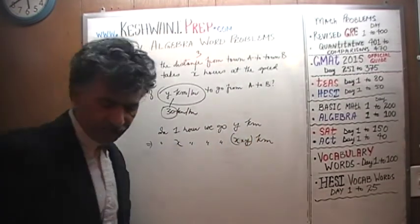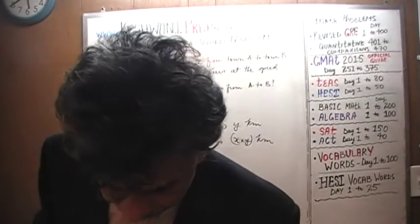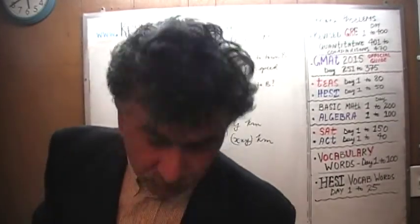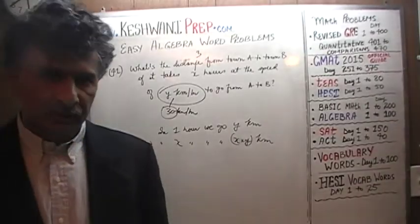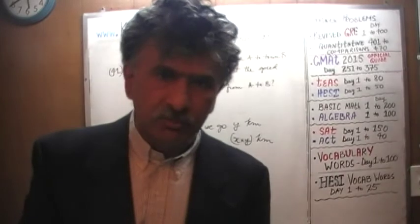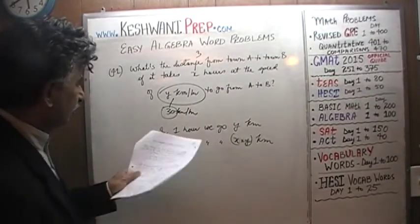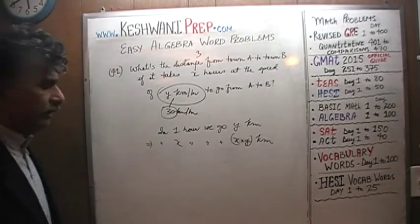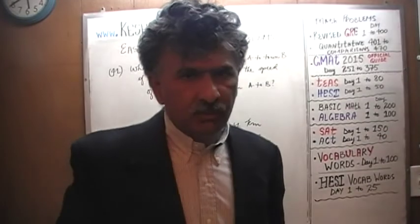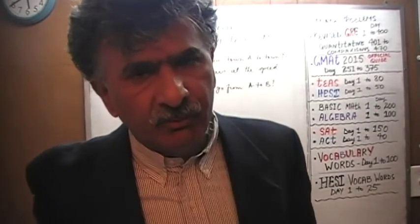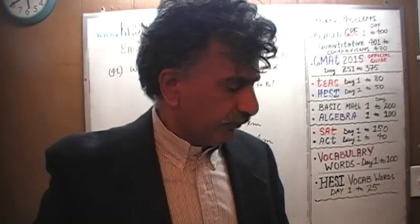That's it — that's your answer: X times Y. But the problem is too simple, so let's do another one that will be a little bit more challenging. The answer is: the distance from town A to town B is X times Y kilometers, or XY kilometers.